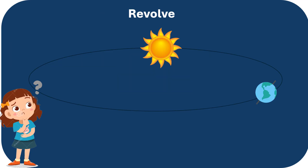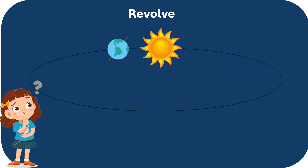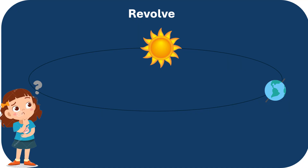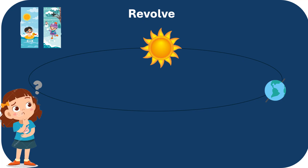The next concept is revolve or revolution. As the term suggests, revolve or revolution is where one object revolves or moves around the other object. So, when the Earth moves around the Sun, it is called revolution. And that is how the different seasons are being caused.